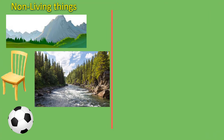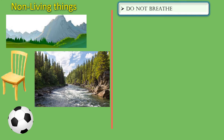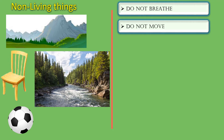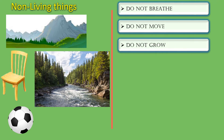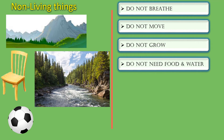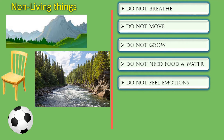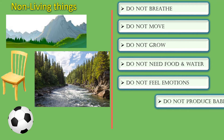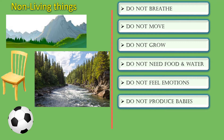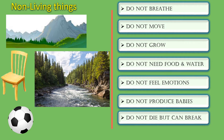Now let us see about non-living things. Let us take an example of a ball and a chair. Non-living things do not breathe, they do not move, they do not grow, they do not need food and water, they do not have any emotions, they do not produce babies, and they do not die but can break or get damaged.